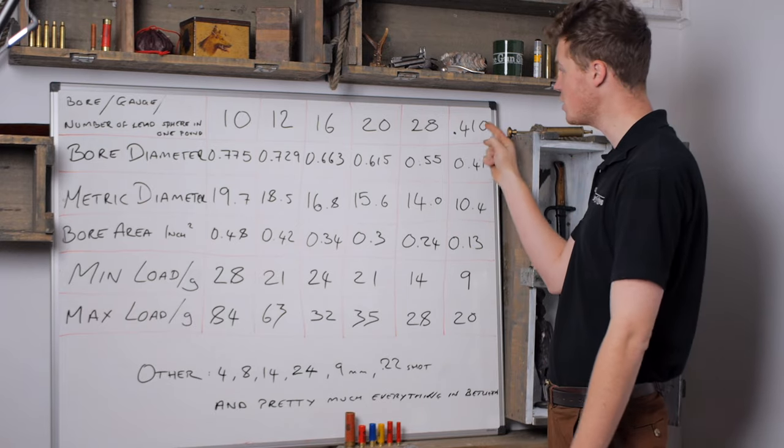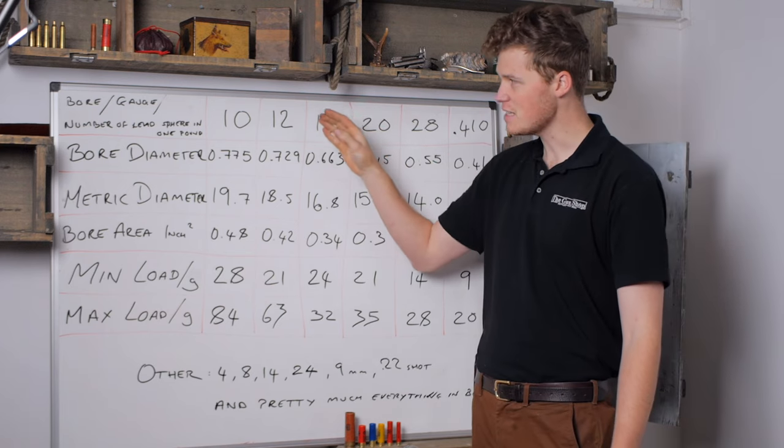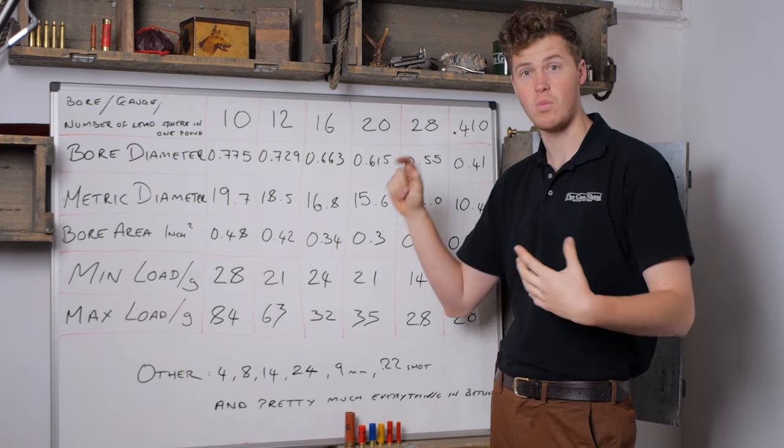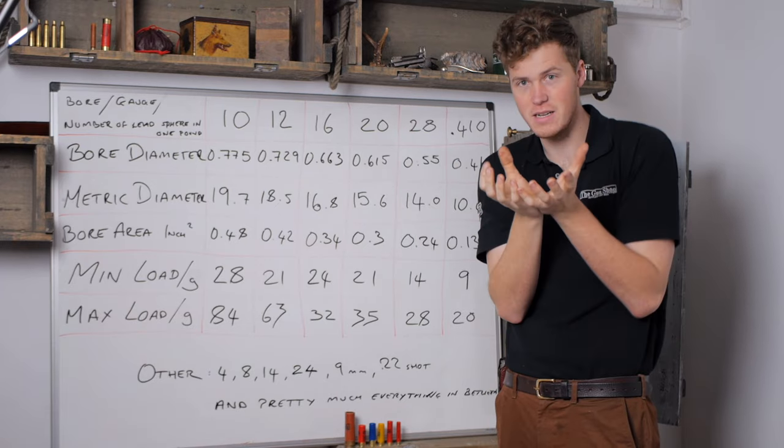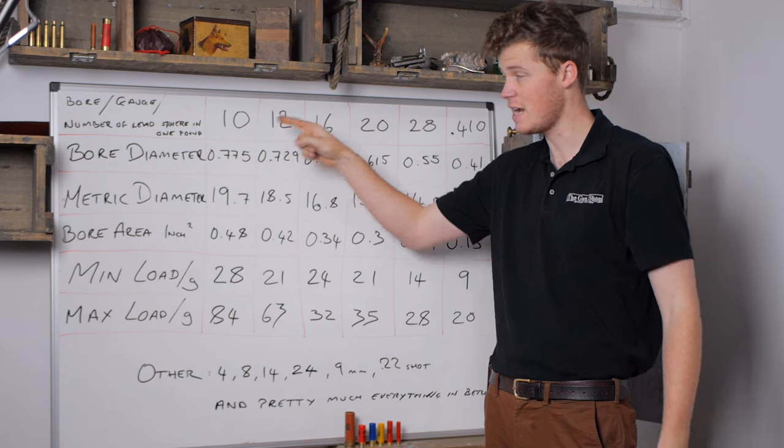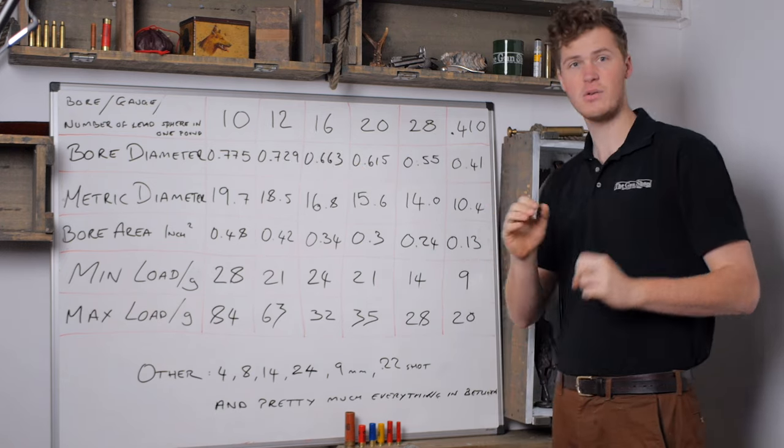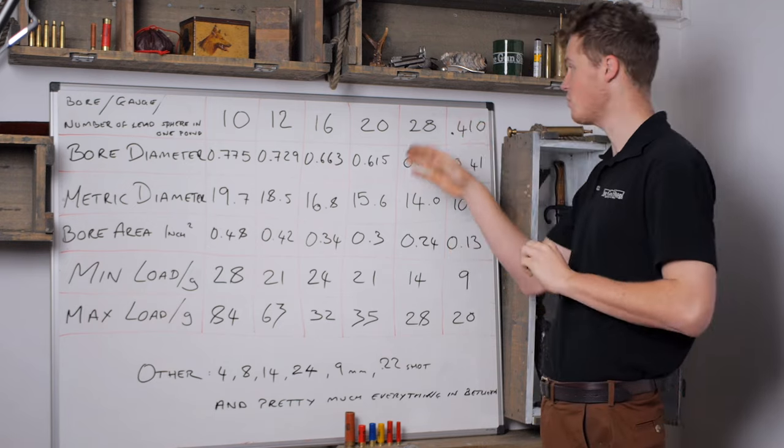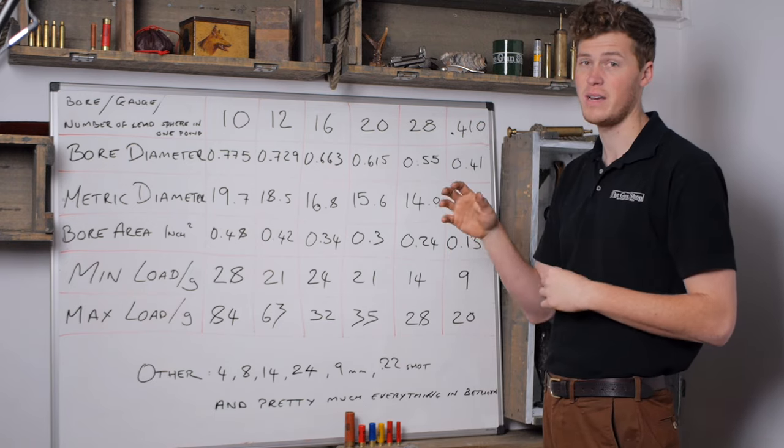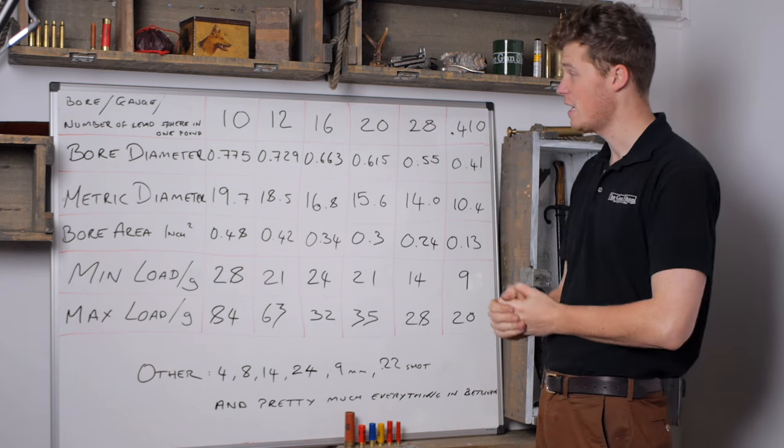So before we go any further, it's probably worth understanding the strange denominations of bore: 10, 12, 16, 20, 28. That is the number of lead spheres of the size that will fit into one pound. So if you get a sphere of lead that is one pound and chop that into tenths, you'll end up with 10 ten-bore-size balls. If you chop it into twentieths, you'll get 20 twenty-bore-size balls to a pound, and so on and so forth. This will step back from a time when lead was purchased by the pound, and it's kind of stuck around ever since.